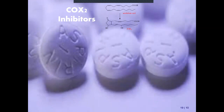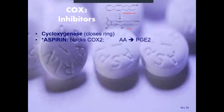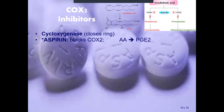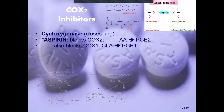COX stands for cyclooxygenase. Aspirin is a COX inhibitor — it blocks cyclooxygenase, which closes the fatty acid chain into the pentagon ring, preventing prostaglandin Group 2 from forming. So aspirin gives you no inflammation and no fever. Aspirin blocks both COX-1 and COX-2, so it blocks blood vessel constriction, inflammation, and anaphylactic bronchial constriction. It is a COX-1 and COX-2 inhibitor.